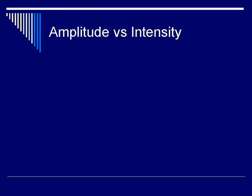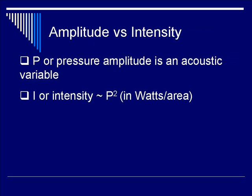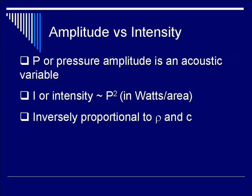Next we want to talk about sound amplitude versus sound wave intensity. As shown in previous diagrams of the propagating sound wave, the peak and valley of the sound wave is denoted by P, or the pressure amplitude. If you square P, you get intensity, which is a form of power density measured in watts per area. Ultimately, intensity I is inversely proportional to the density rho of the material, as well as the velocity of sound in the particular medium C.